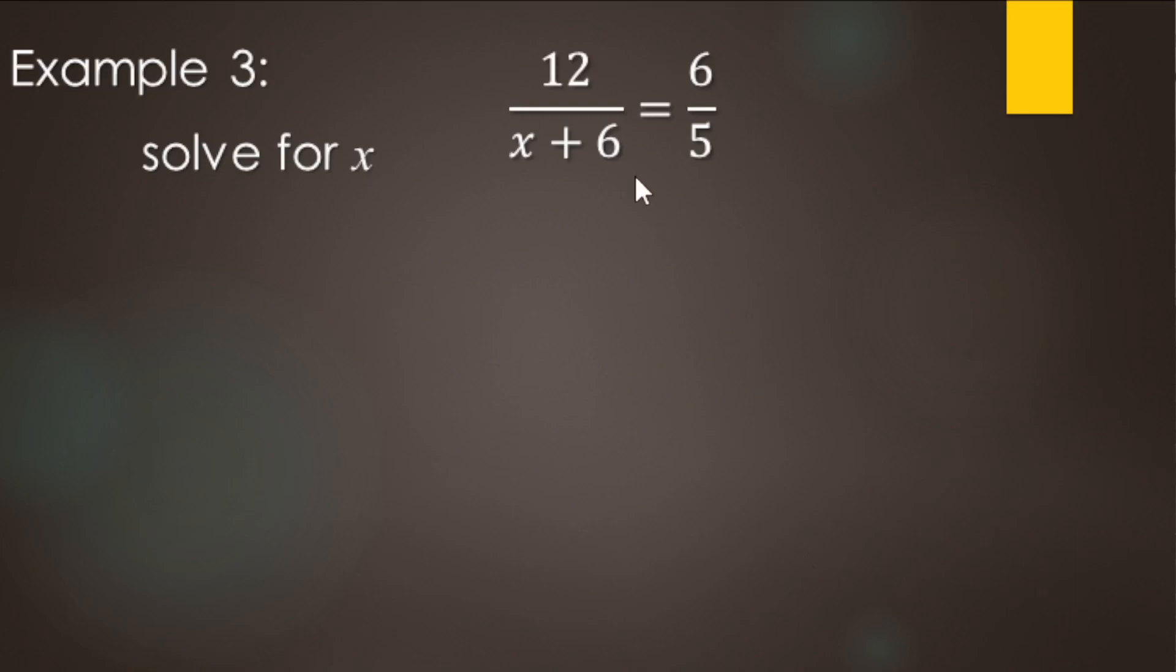So here we go. We got 12 over x plus 6 equals 6 over 5. Cross multiply is the most direct first step. So here we go. 12 times 5 would be 60. And then we're doing x plus 6 times 6. So here we go. That's going to be 6 times x plus 6.